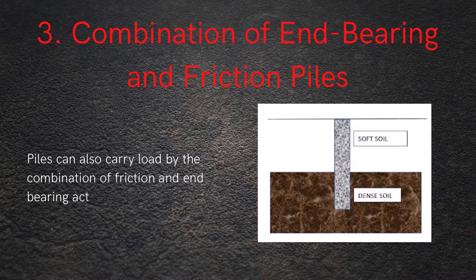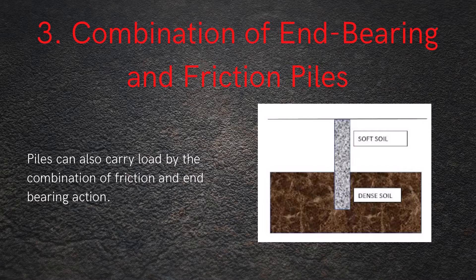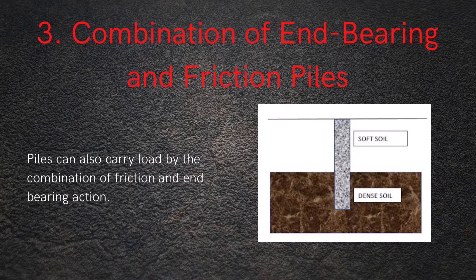For example, as shown in the figure, if a pile can pass through the soft soil that provides sufficient frictional resistance and finally finds a firm layer that levels up load bearing capacity by end bearing, then such a pile system is a combination of end bearing and friction piles.